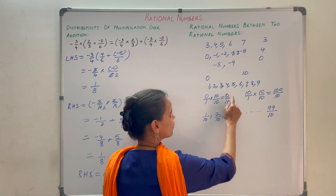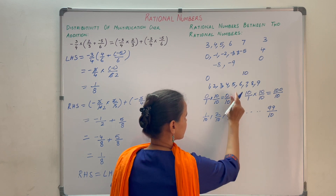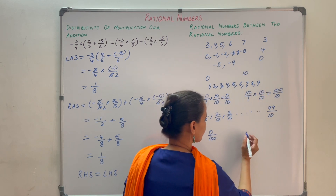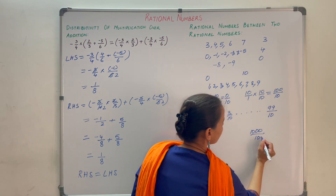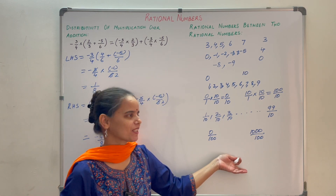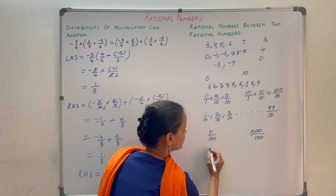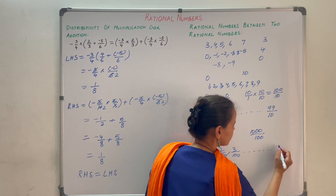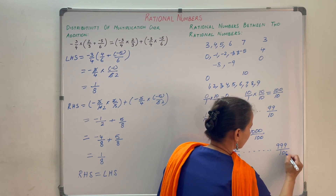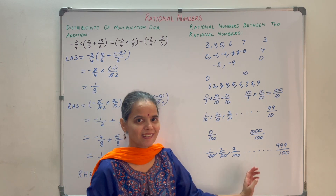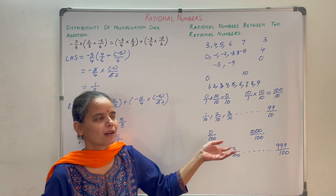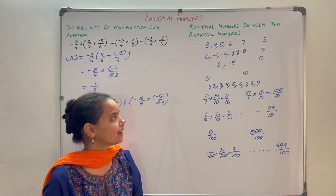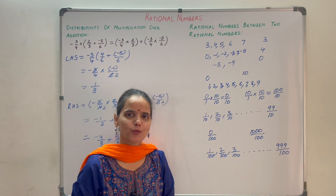Multiplying both numerator and denominator by 100 gives 0 by 100 and 1000 by 100. Now between them you have 1 by 100, 2 by 100, 3 by 100, and so on till 999 by 100 — giving 999 rational numbers. You can keep multiplying by multiples of 10, so we can say that there are infinite rational numbers between any two given rational numbers.